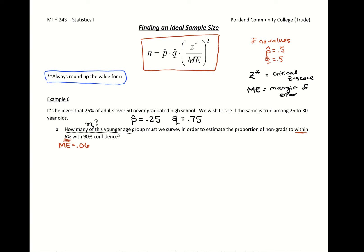And then they tell us z star. So if we have 90% confidence from the z star values that we found earlier, that's going to be 1.6449.